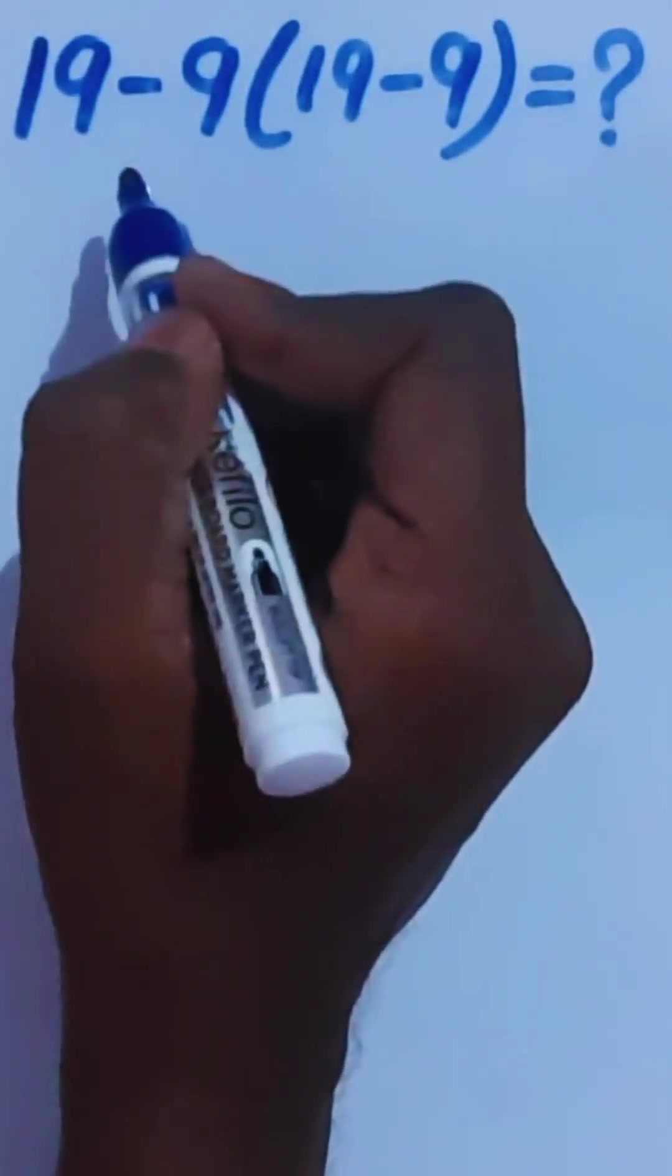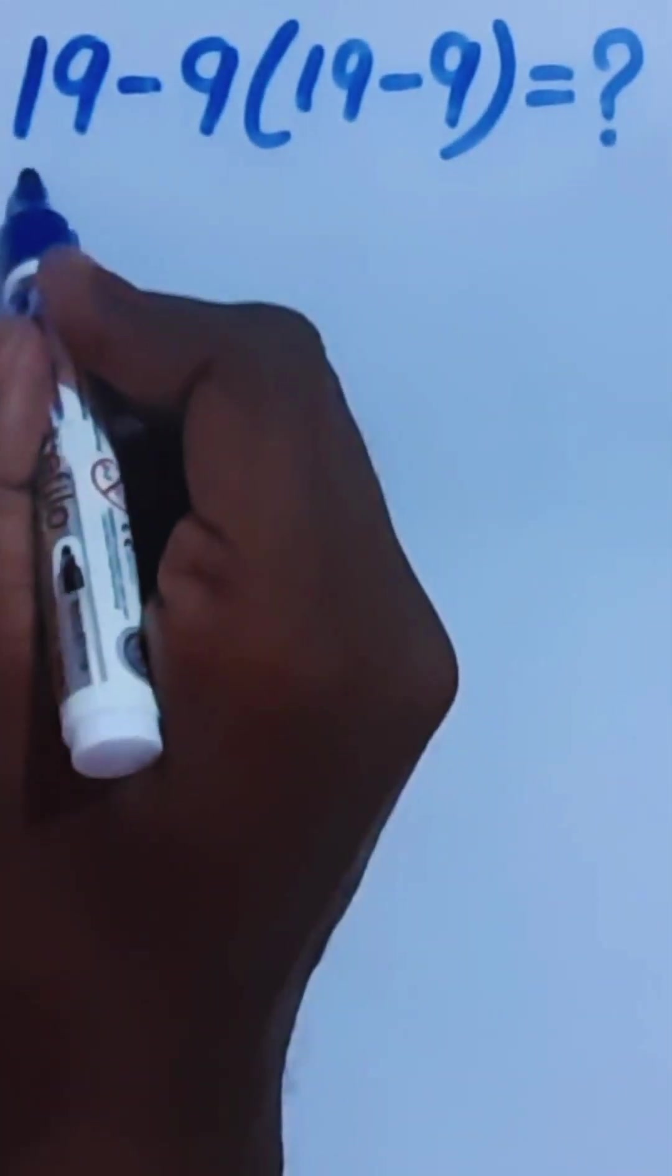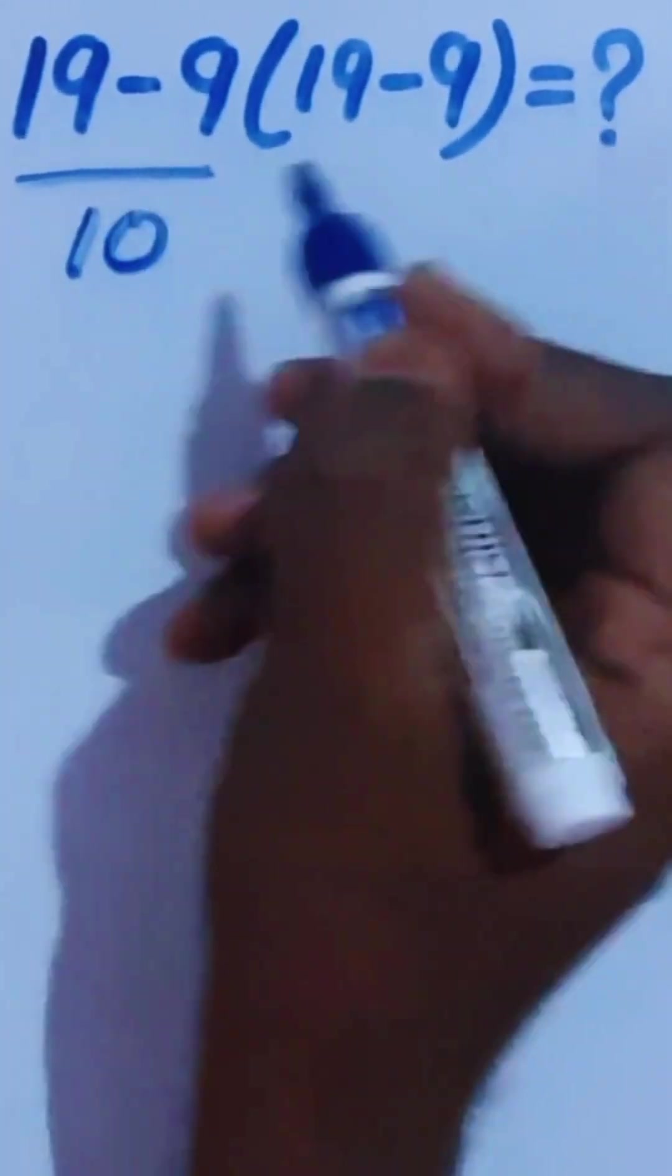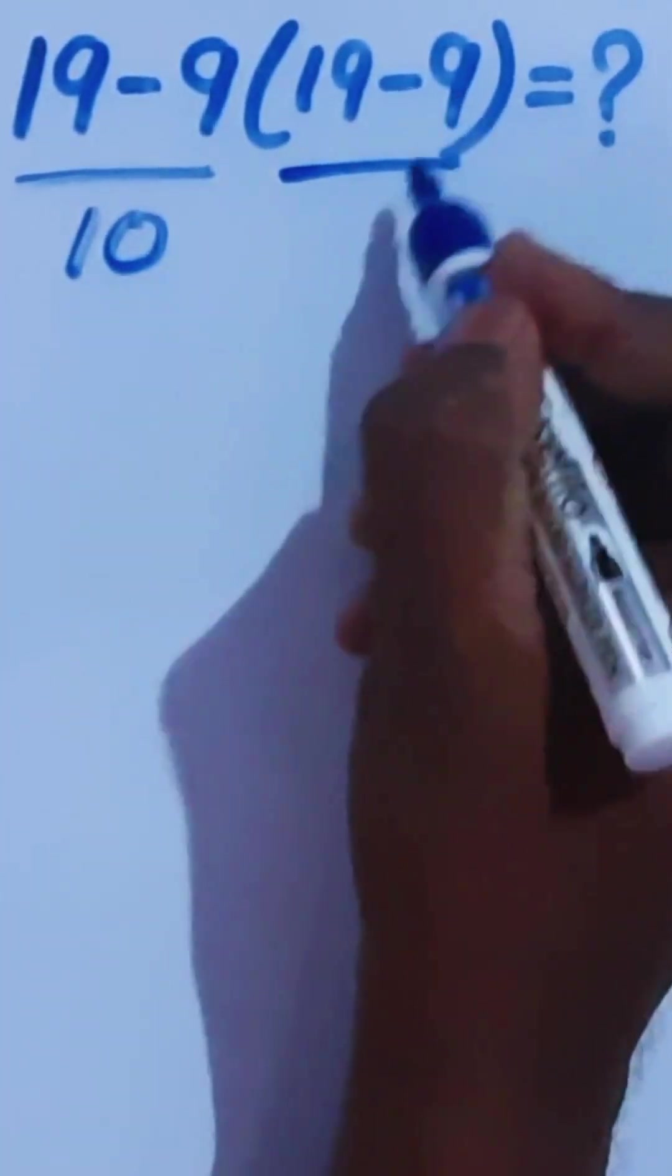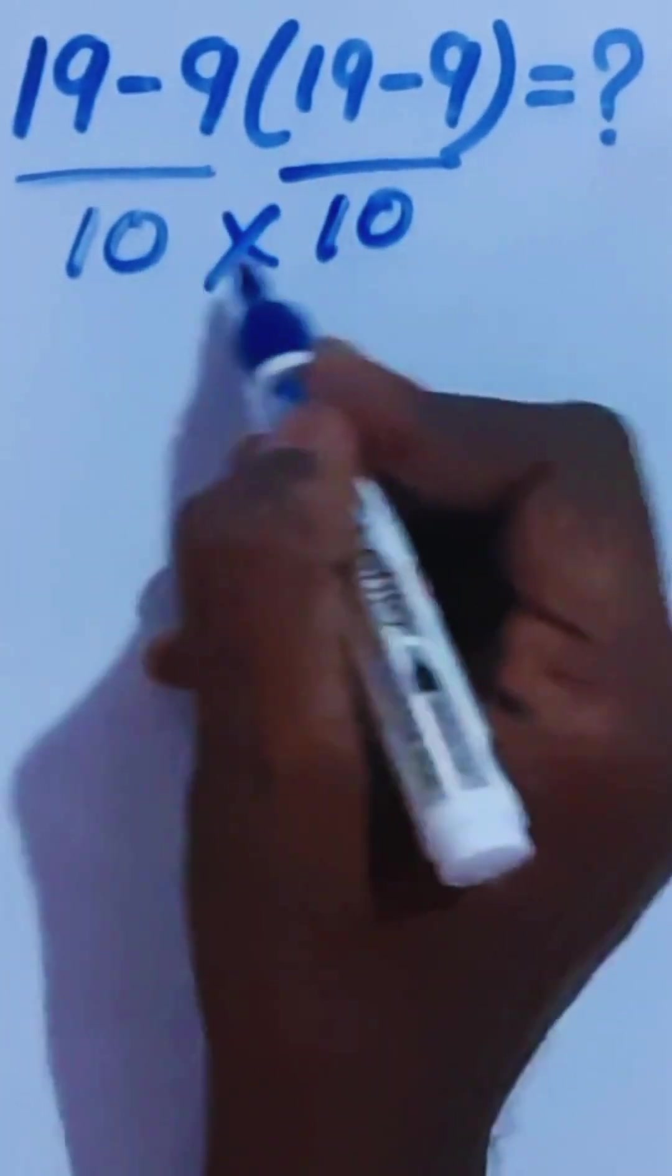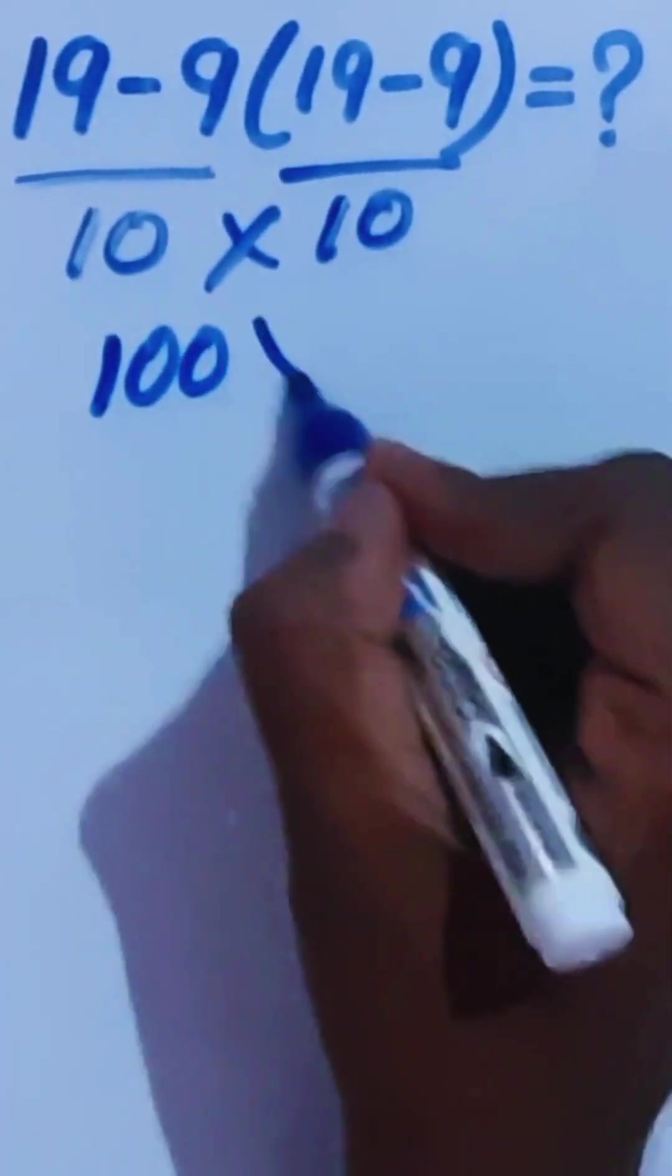Hi guys, most people get the answer 100 for this problem in the wrong way. Here 19 minus 9 is 10, and here 19 minus 9 is 10. Then 10 times 10 is 100, which is wrong.